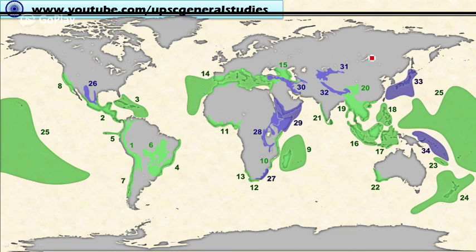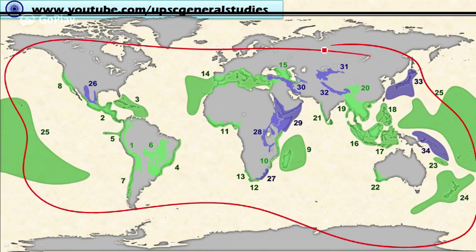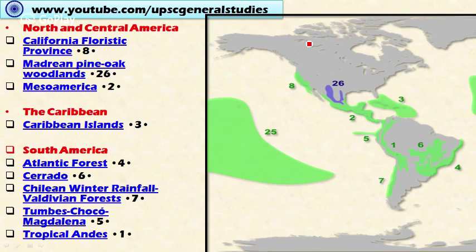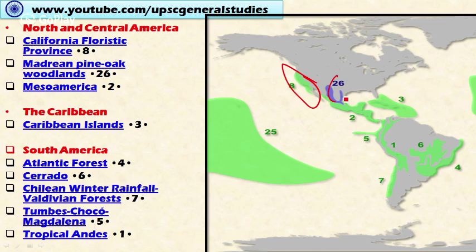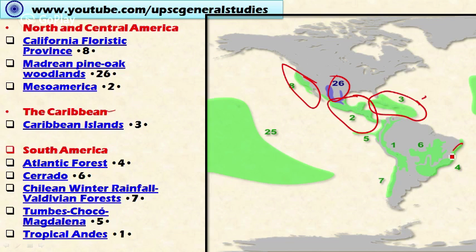Let's look at the locations of biodiversity hotspots throughout the world across various continents. In North and Central America, we have the California Floristic Province in the United States, and Madrean Pine-Oak Woodlands in the US connected with Mexico, and Mesoamerica in Central America. In the Caribbean, we have the Caribbean Islands including their oceanic resources.